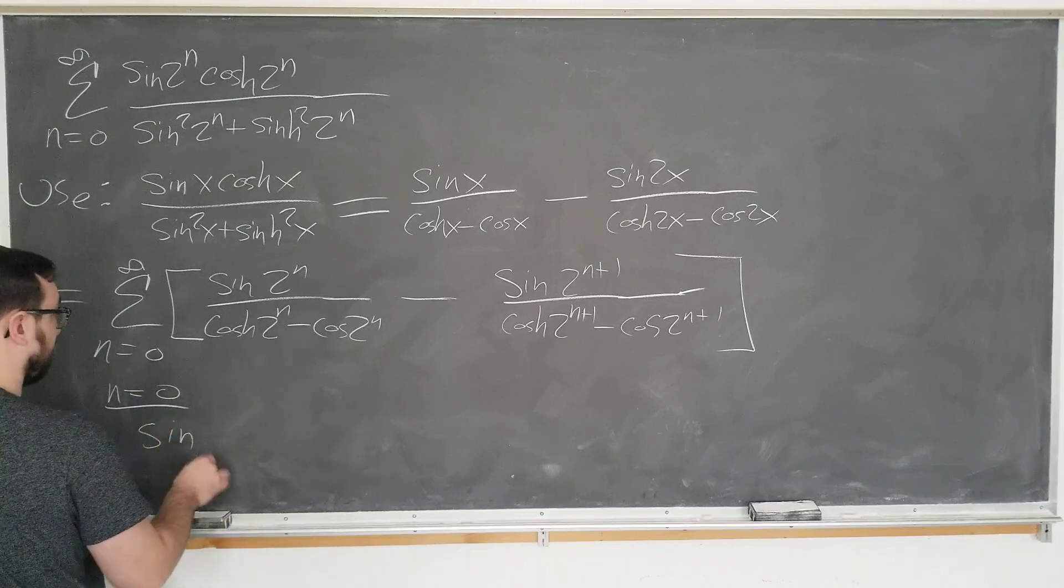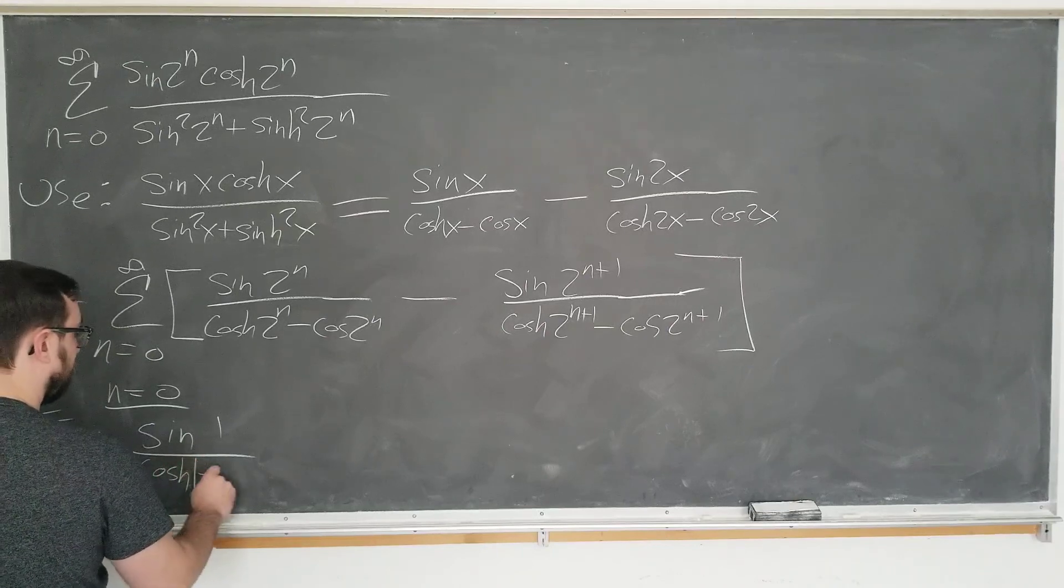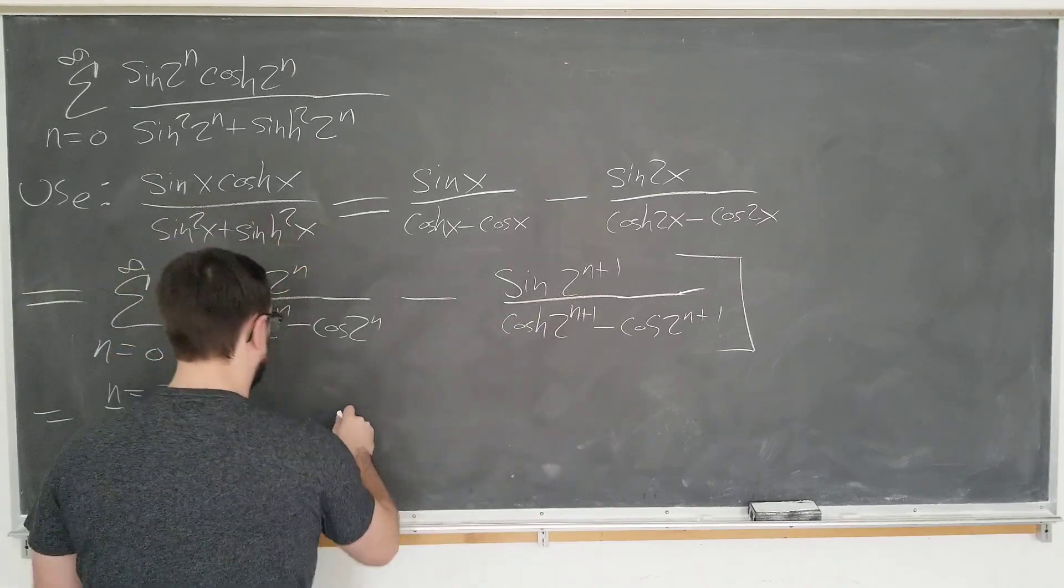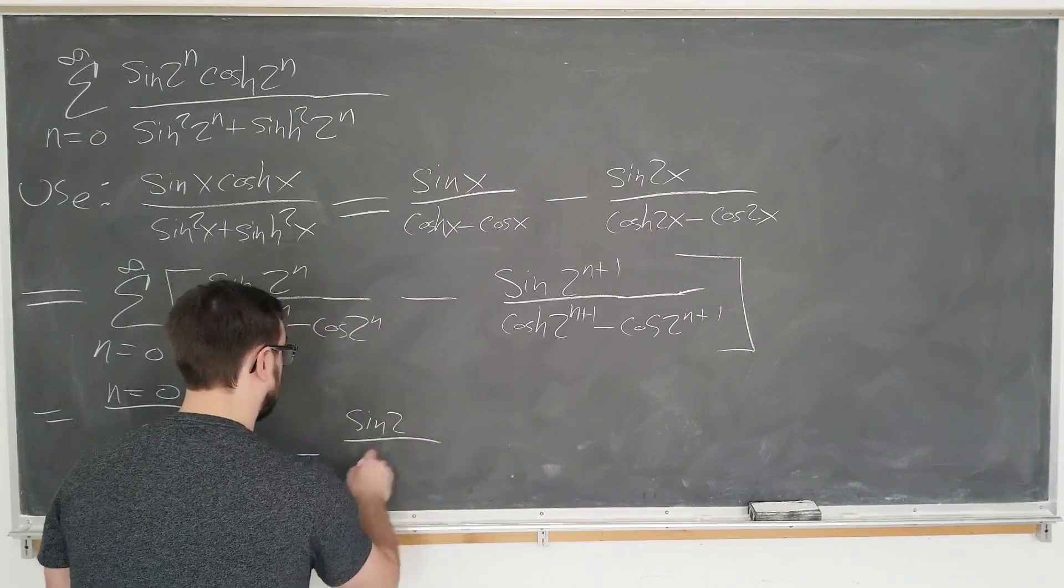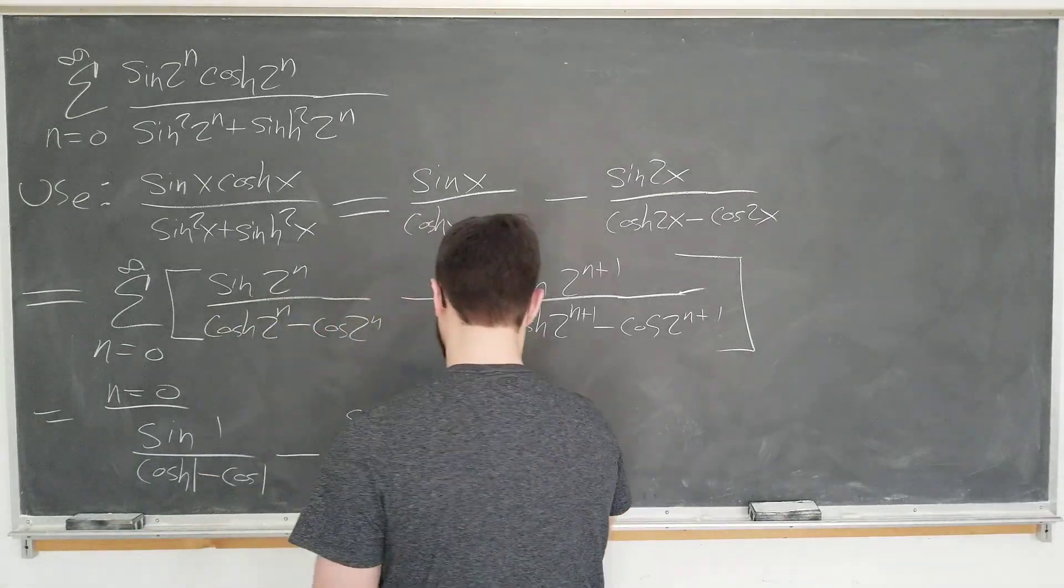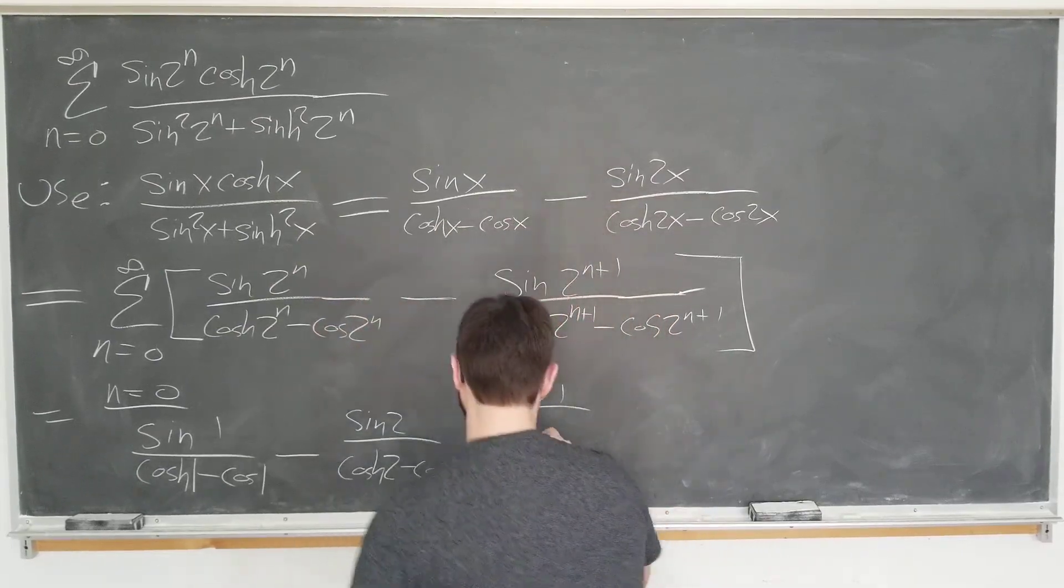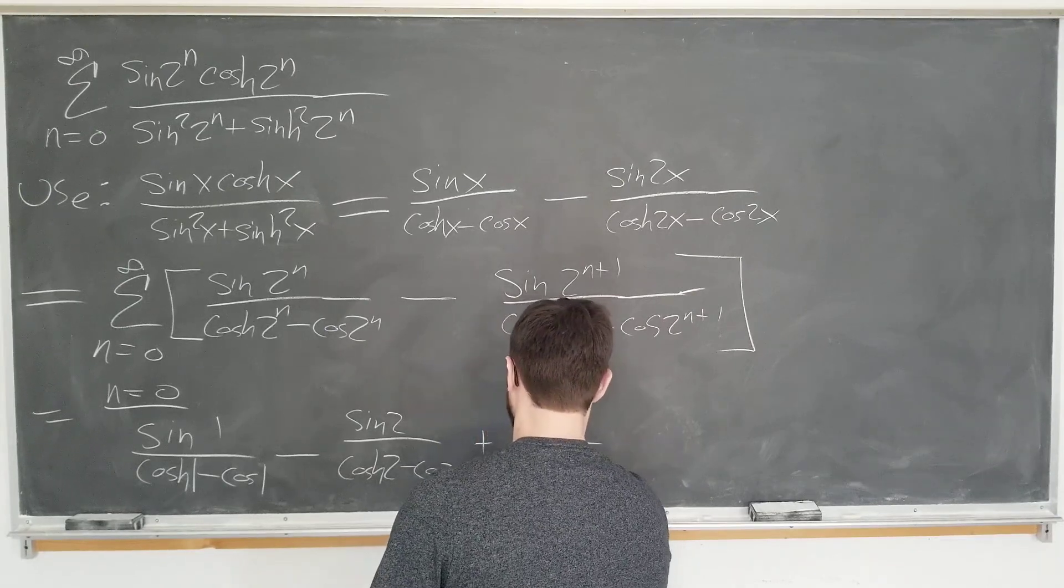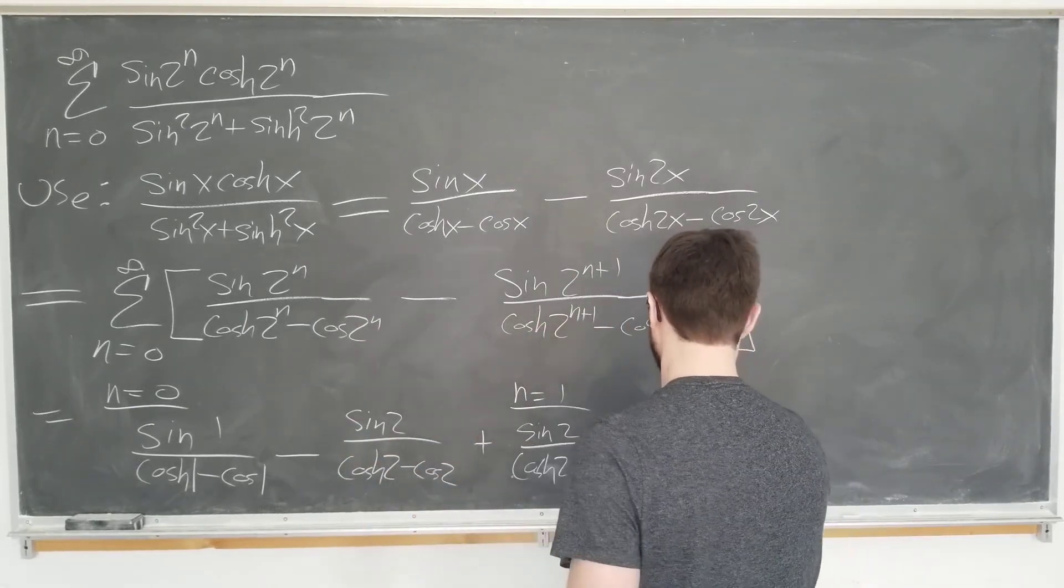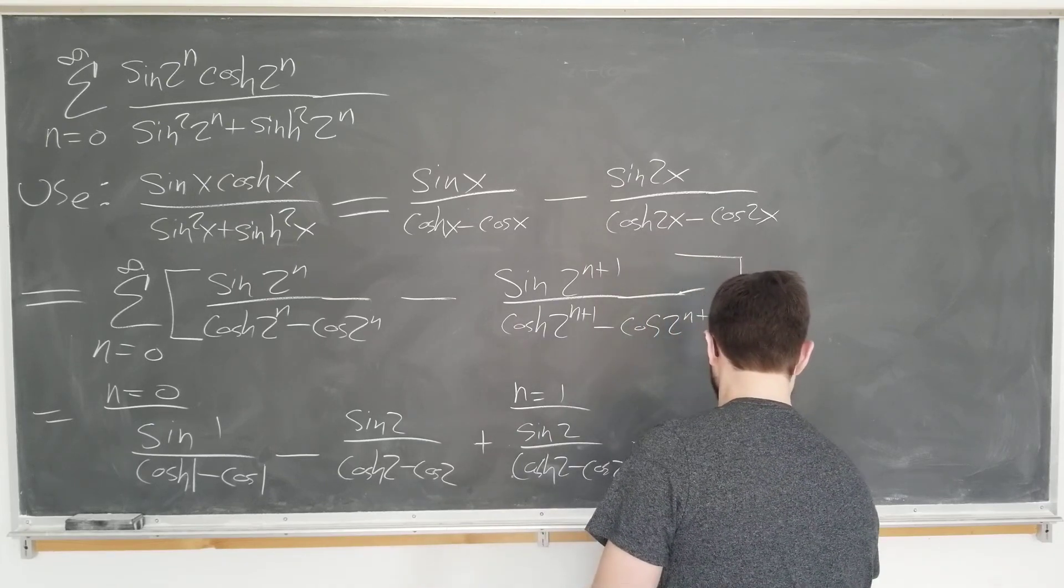So the first term here equals 0. It just becomes sine of 2 to the 0 which is 1 over cosh 1 minus cos 1. And we have a second term here. The next power of 2 is 2. So it becomes sine 2 over cosh 2 minus cos 2. Okay, that's the first term. And when n equals 1, we have sine of 2 here. We can immediately see that that term is going to cancel over cosh 2 minus cos 2. And the next power of 2, sine of 4 over cosh 4 minus cos 4.